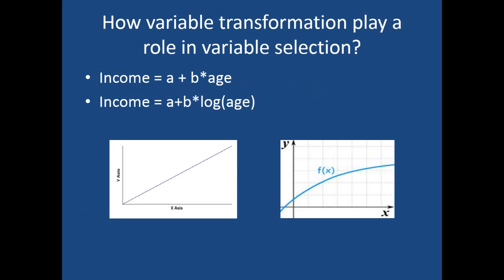The next question is: how does variable transformation play a role in variable selection? This is a little complicated, so let's try with an example. Let's say we are trying to model income with respect to age — we want to know how age impacts income, or how we can predict somebody's income with respect to age.